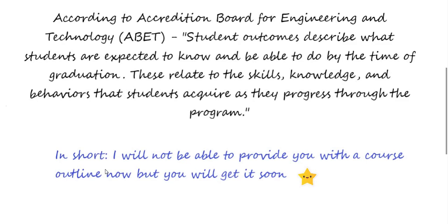According to ABET — the Accreditation Board for Engineering and Technology, which is the most renowned organization giving accreditation to universities — student outcomes describe what students are expected to know and be able to do by the time of graduation, relating to the skills, knowledge, and behaviors acquired through the program. I will not be able to provide a course outline right now, but you will get it soon. In the meantime, I will tell you what you will encounter in this course.